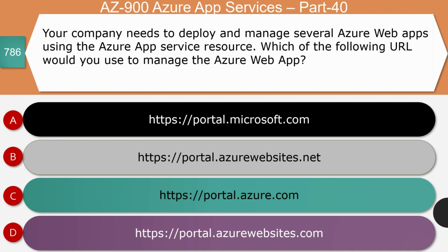Next question — your company needs to deploy and manage several Azure web apps using Azure App Service. Which of the following URLs would you use to manage Azure web apps: portal.microsoft.com, portal.azurewebsites.net, portal.azure.com, or portal.azurewebsites.com? The right answer is portal.azure.com.